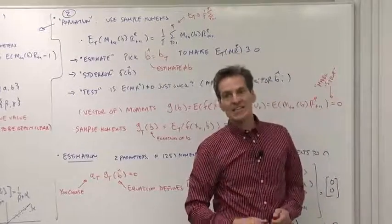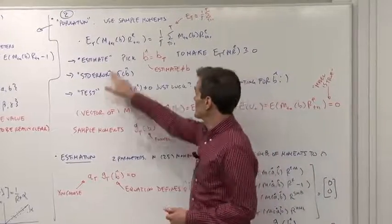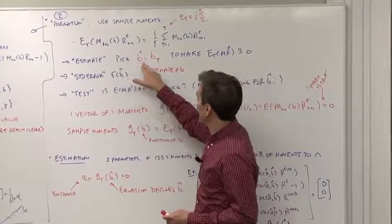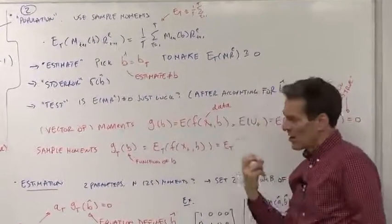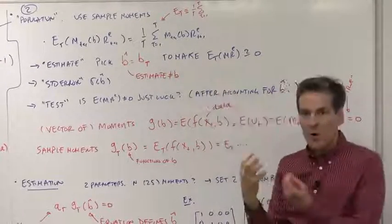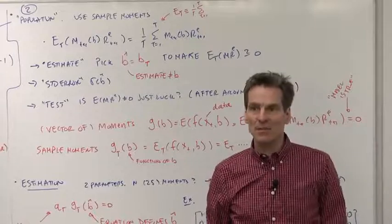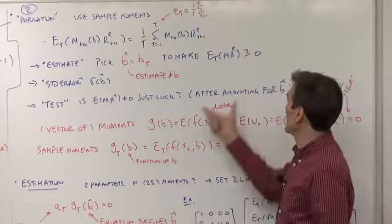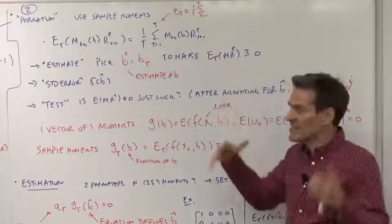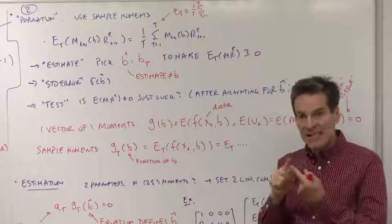So we have three tasks now. Our tasks are to estimate, to find the free parameters, to find sample values, B hat or B sub T are our best guesses. We're going to pick those to try to make these moments as close to zero as possible. That's the estimating philosophy. The model says they should be zero. We will set the sample moments to zero as close to zero as possible.